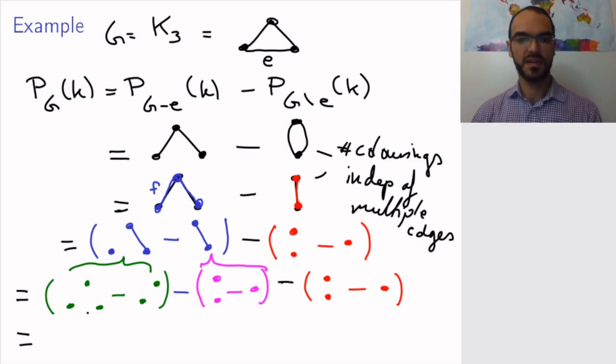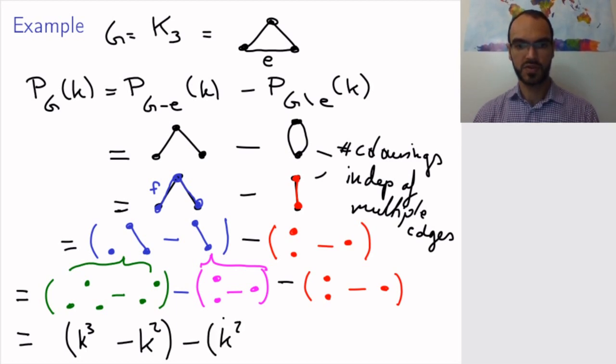So now, what is P_G(k) for these things? So the first one is a null graph on three edges. That's k^3. The second is k^2. This is k^2, because two vertices, not edges, vertices. Here is k to the power one, because one vertex. And here is the same.